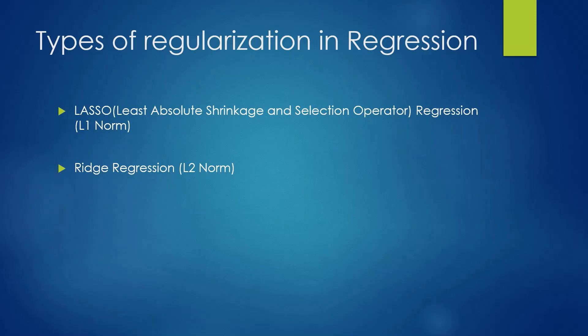Types of regularization in regression: there are basically two types of regularization techniques in regression — lasso regression and ridge regression. Lasso regression is also termed as the L1 norm, while ridge regression is also termed as the L2 norm.